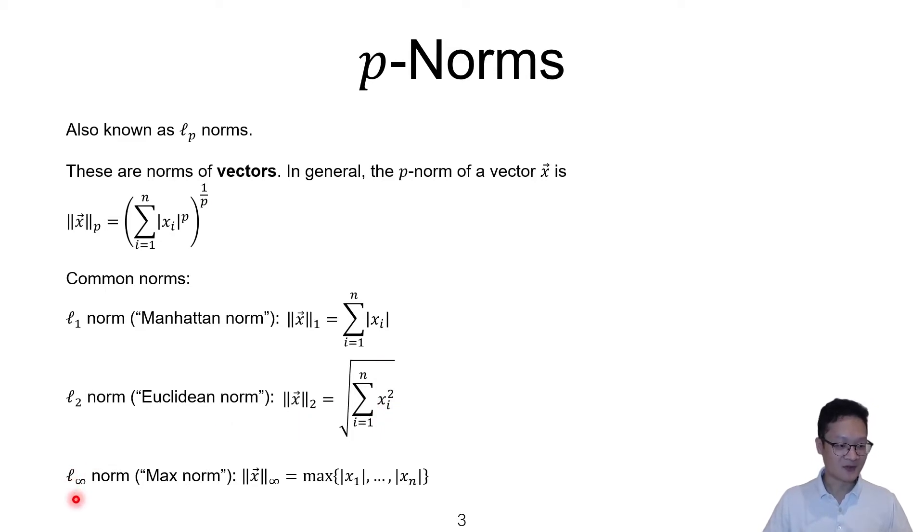Another common norm is the l-infinity norm or the max-norm. So basically, the infinity norm is just the maximum of the absolute values of all the components.